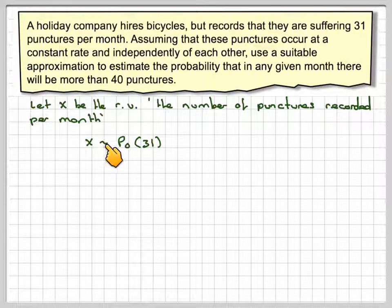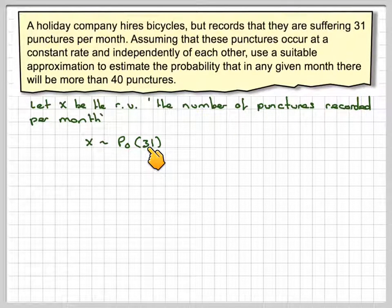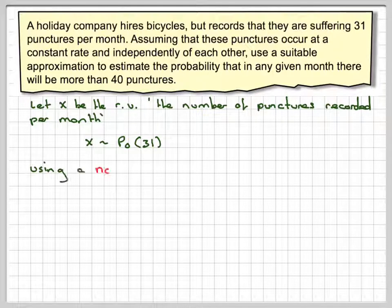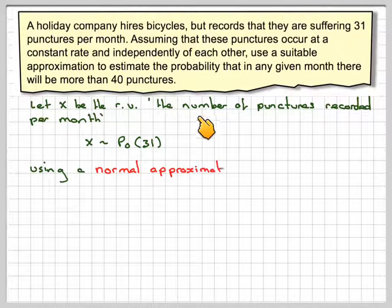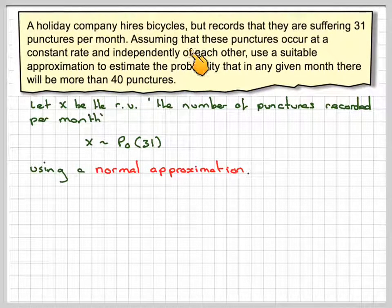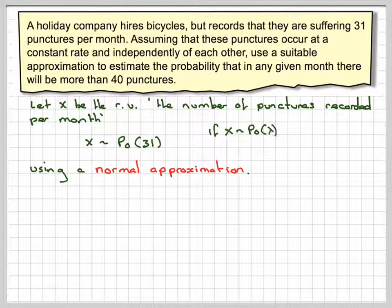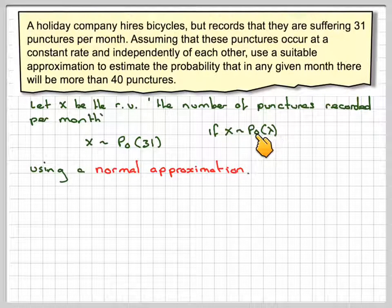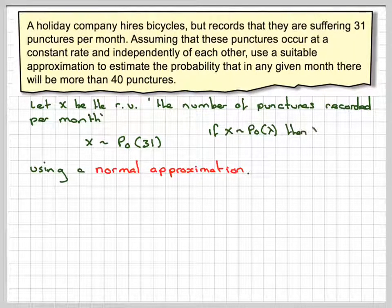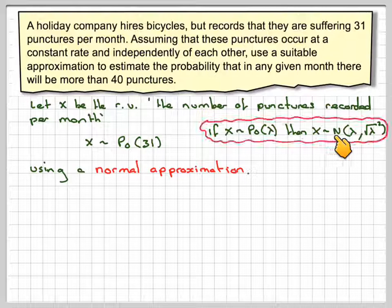If X follows a Poisson distribution with a mean of 31, and using a normal approximation because it says you have to do that, use a suitable approximation. Using a normal approximation, then we know if X is Poisson distributed Poisson lambda, then X can be approximated by normal lambda,